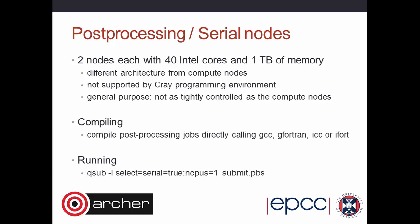There are also post-processing or serial nodes — a couple of nodes with 40 cores and a lot of memory. They're a different architecture from the compute nodes, not natively supported by the Cray programming environment, and more general purpose. They're there for two things: big compilation jobs, and most importantly pre- and post-processing, which is why they're equipped with so much memory. To compile for these serial nodes, use the native compilers (gcc, gfortran, icc, ifort) — not the compiler wrappers, which cross-compile for the backend compute nodes. Submit with 'qsub -l select=serial=true -l ncpus=1'.